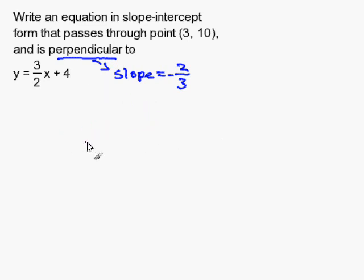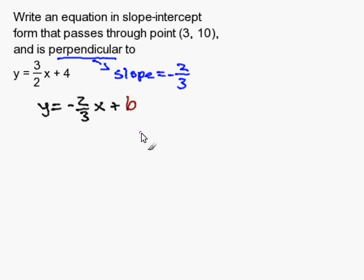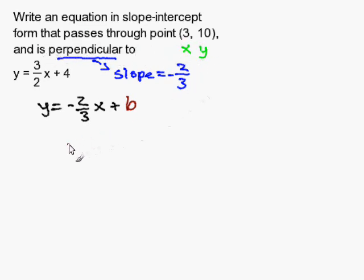Now I'm going to start my slope-intercept equation with the new slope. But what I'm missing is the y-intercept, so I'm going to call that b. To solve for b, I need to substitute in the x and y values given, because the line passes through the point. So for y I'm going to substitute in 10, and for x I'm going to substitute in 3.